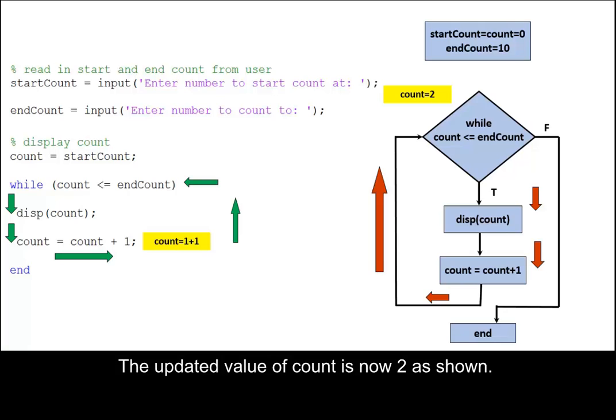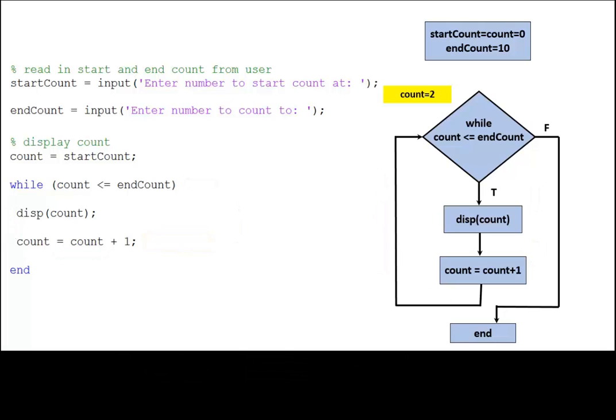The updated value of count is now two, as shown. The loop continues the same pattern for count equal to two, three, four, up to ten.